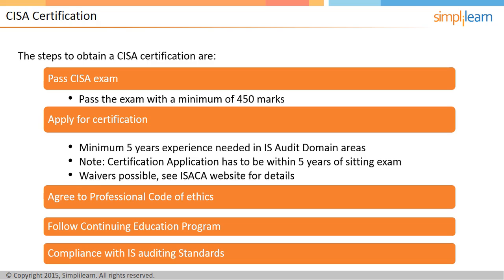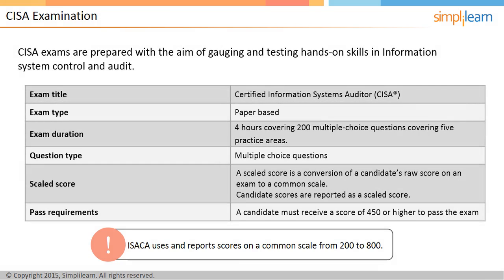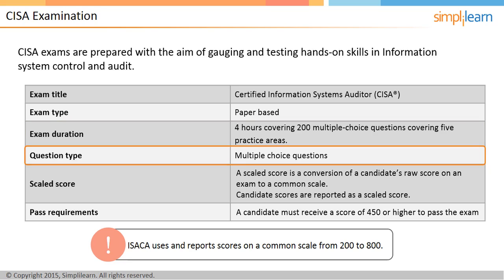The CISA exam questions are prepared with the intent of measuring and testing practical knowledge. The CISA exams are prepared with the aim of gauging and testing hands-on skills in information system control and audit. It is a paper-based exam that consists of 200 multiple-choice questions covering 5 practice areas, which must be completed within a 4-hour period.